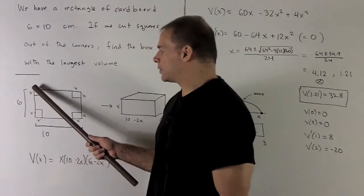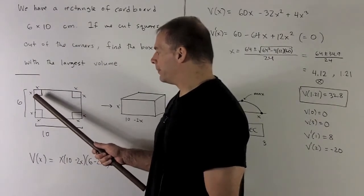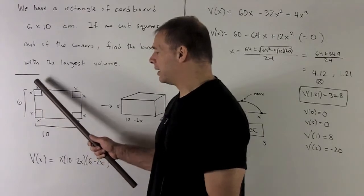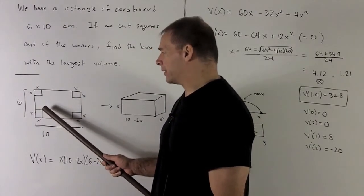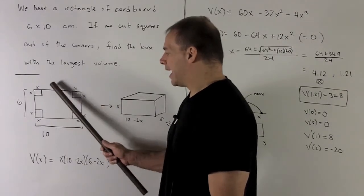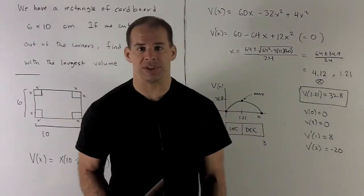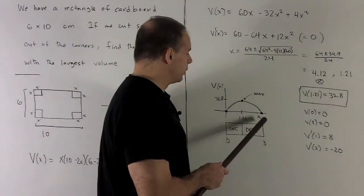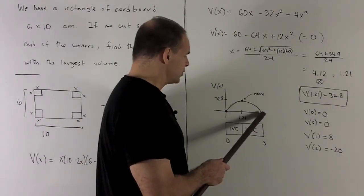Similarly, if I let x be equal to three, well, that's taking out as much as I can out of this side. We won't get a volume because there will be nothing to flip up. There might be a little area in the middle, but that area will still have volume equal to zero. So we notice over at three, we're going to have zero also.